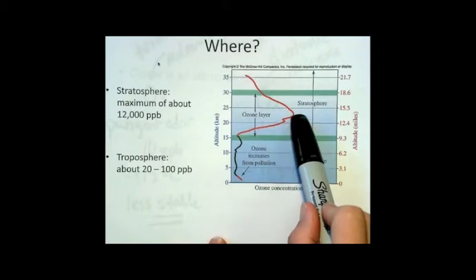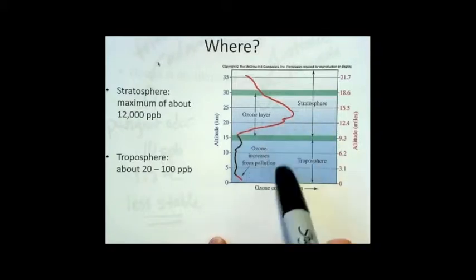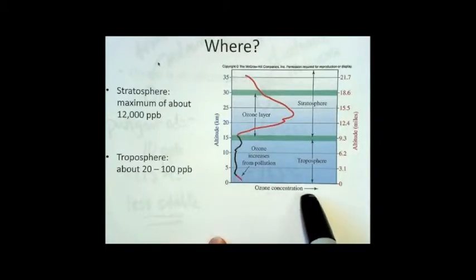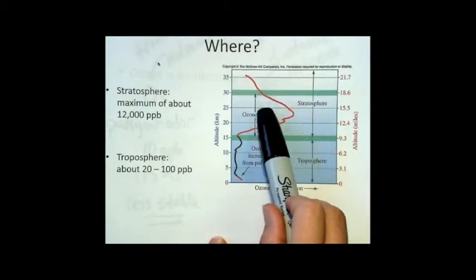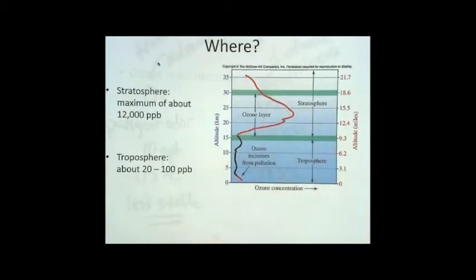At the maximum level up here, it's about 12,000 parts per billion, and down here, that would be about 100 parts per billion. So that gives you a sense of the scale. There's no units on this particular scale. It's just a relative scale showing the increase in ozone concentration. So it's showing that in the stratosphere is where we find a higher concentration at 12,000 parts per billion ozone.